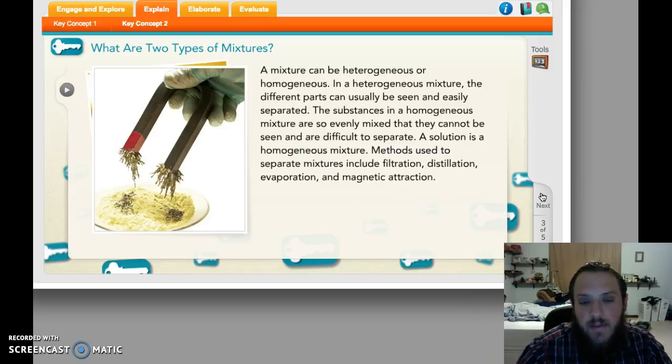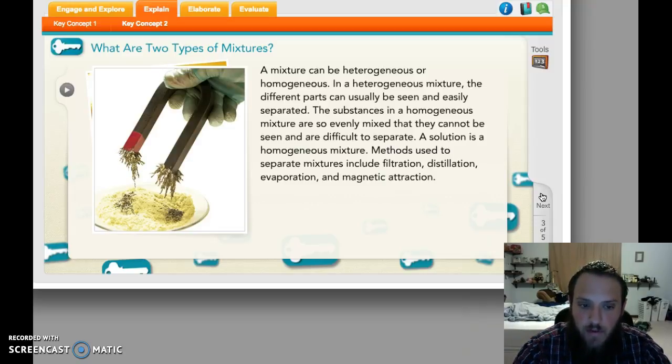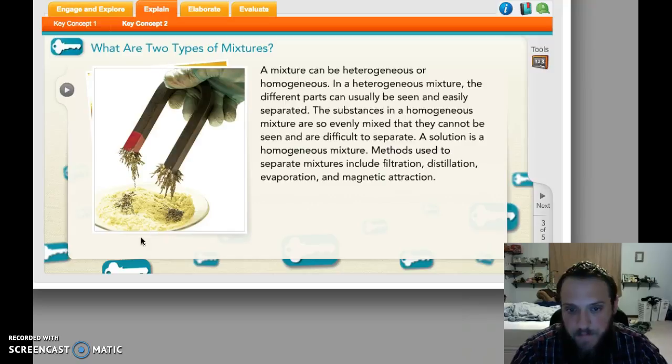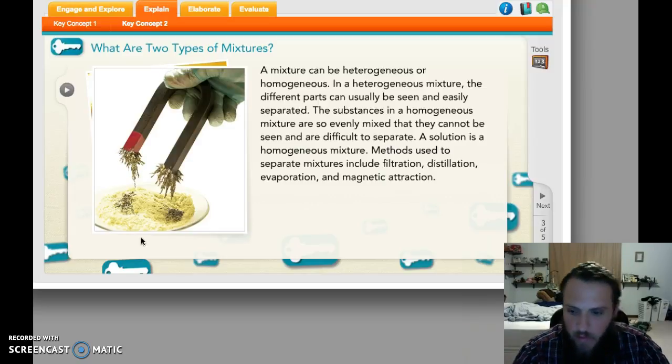Heterogeneous means different. Heterogeneous mixtures are easy to separate. You can see the different parts. If you look at the cornstarch and iron example over here, it is very clear where the iron is, and very clear where the cornstarch is. You can use a magnet to separate them. In general, these heterogeneous mixtures are very easy to take apart, because you can see them. You can kind of pick through and pick them out.